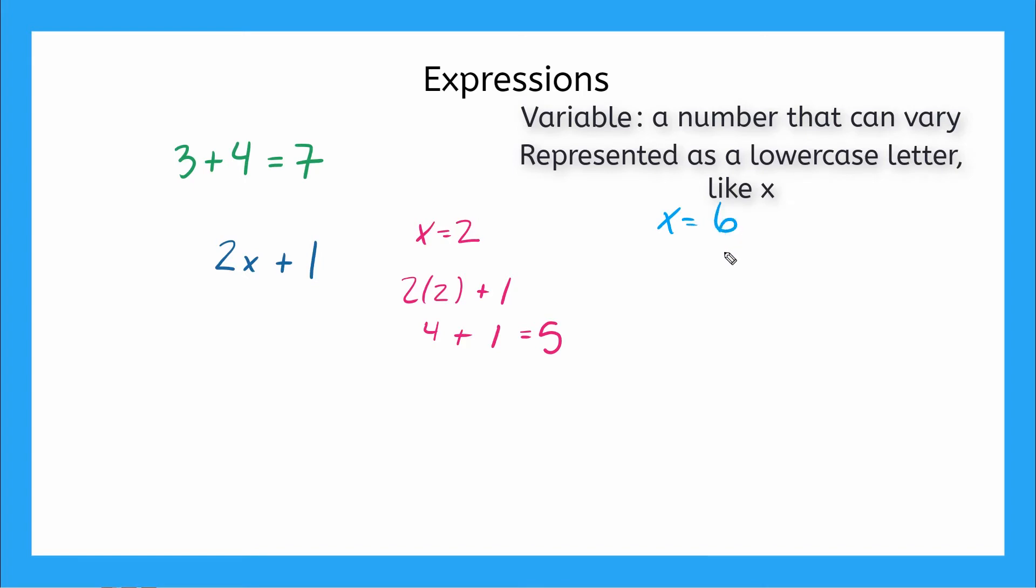But what if we're told that x is equal to 6? Then to evaluate this expression, we're going to use substitution again. So we'll have 2 times 6 plus 1. Using order of operations, we multiply first, we get 12 plus 1, and that would give us 13. Perfect. So we know all about expressions.